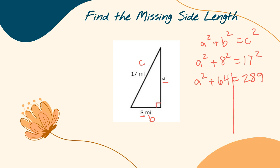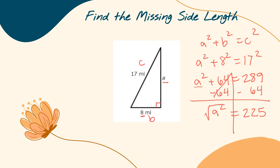Now I'm ready to move things across. 289 is by itself, and I need to get A squared by itself. So I subtract 64 on both sides — that cancels out — leaving A squared equals 289 minus 64, which equals 225. Now I take the square root of both sides, since that is the opposite of squaring. That cancels out, so A equals the square root of 225 — what number multiplied by itself equals 225? That equals 15, because 15 times 15 equals 225. So A equals 15. You can plug all your numbers back into the Pythagorean theorem to verify.